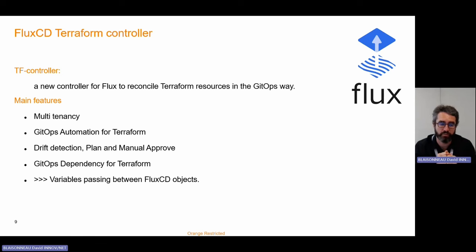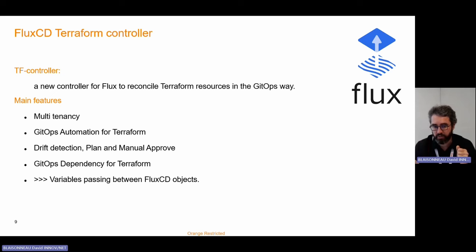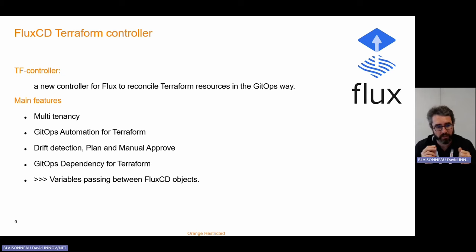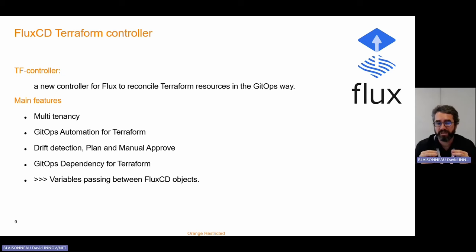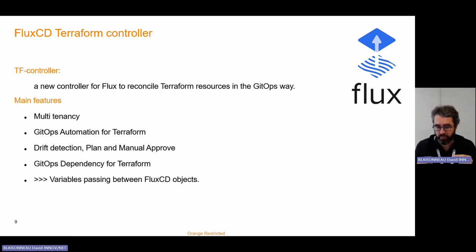This Terraform controller is multi-tenancy capable. It clearly allows us to have GitOps automation for Terraform. It will ensure that the intent we have in Git is what will be deployed in reality in the infrastructure. We also have drift detection, plan and manual approval, GitOps dependencies between Terraform resources to ensure some Terraform definitions run before others, and variable passing between FluxCD objects like kustomizations or Terraform resources using secrets and config maps. That last feature is clearly one of the key elements we are using for our use case.